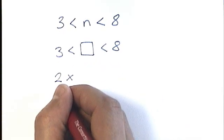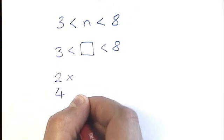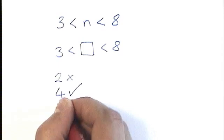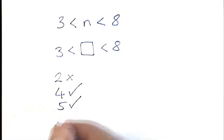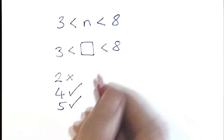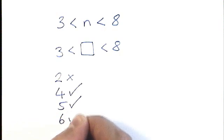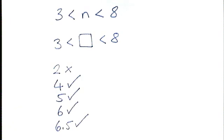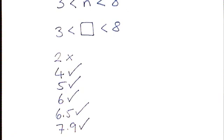Could I put a 4 in the box? Yes, I could. Could I put a 5? Yes. It's between 3 and 8. Could I put a 6? Yes. Could I put a 6.5? Yes. Nothing is stopping me putting decimal numbers. Could I put 7.9? Yes. It's still between 3 and 8.